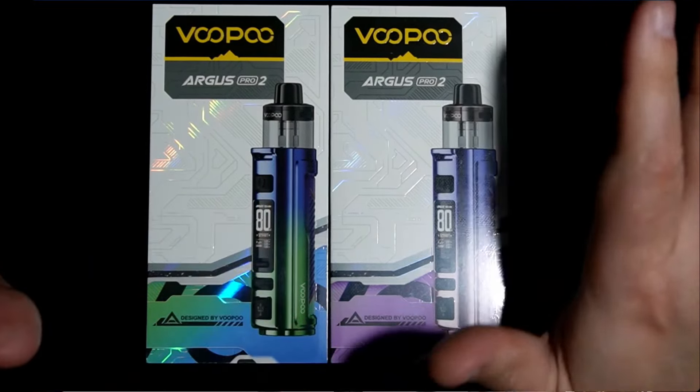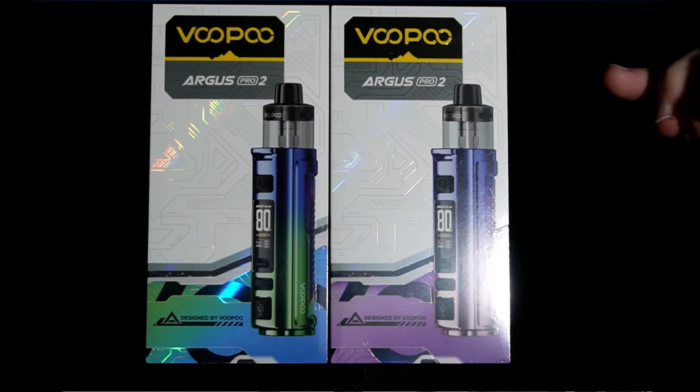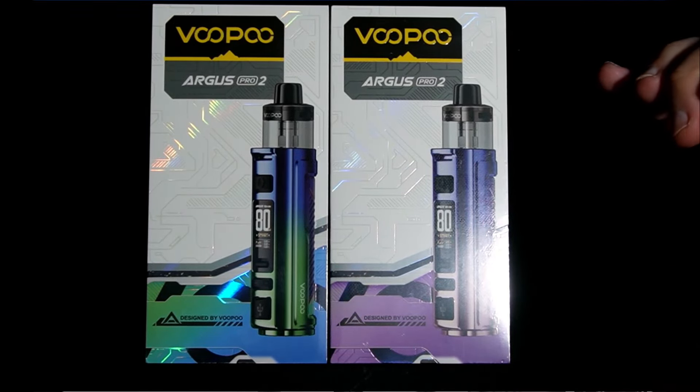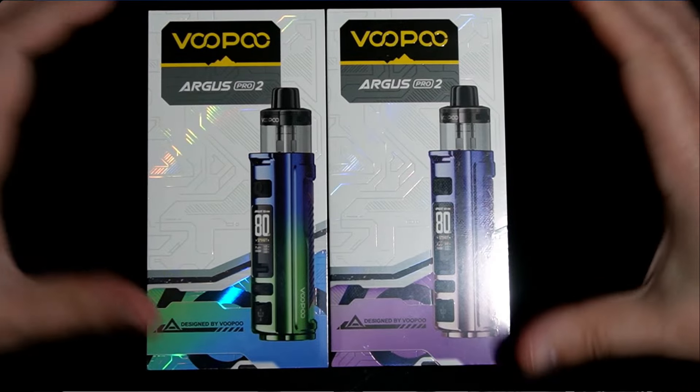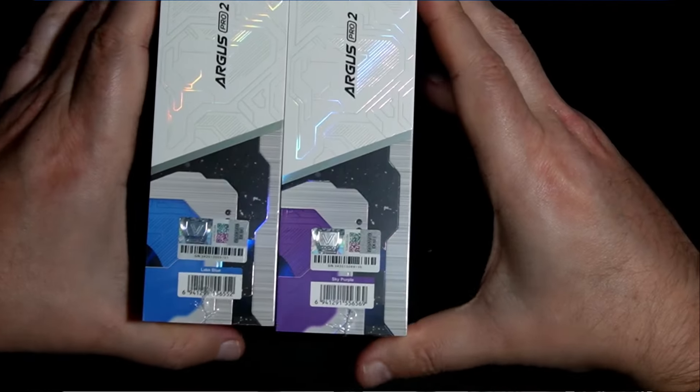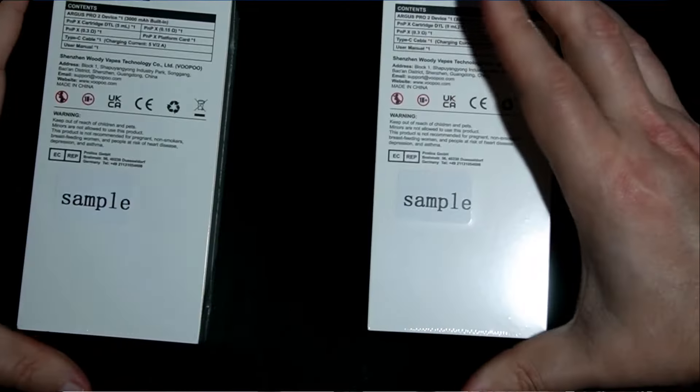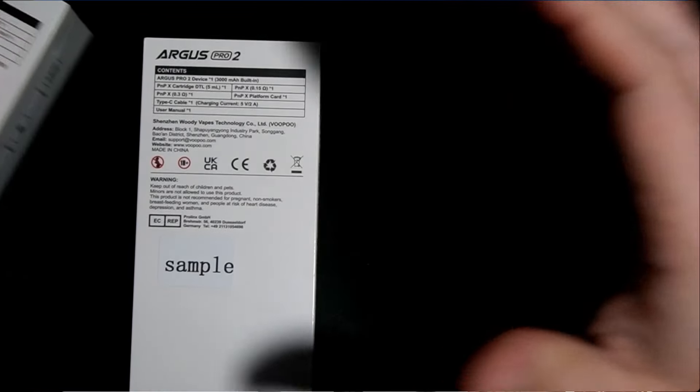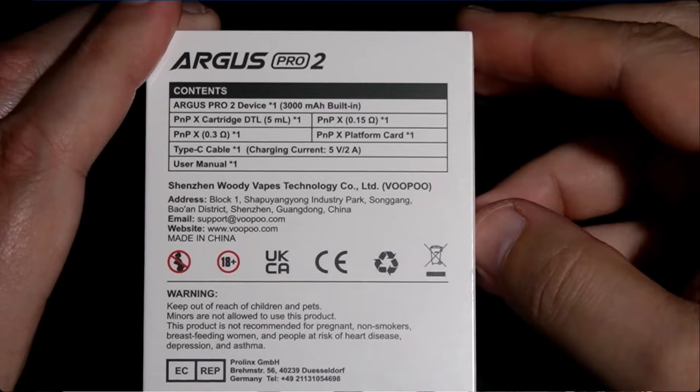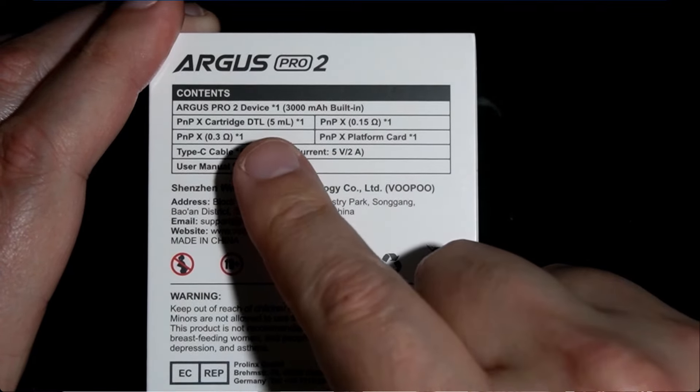Best coils in the game, period. Voopoo Argus Pro 2. It's been a while since I've done a vape review. Designed by Voopoo on the side of the box. On the back side, let me just pull one out so you can see the back of it. Everything that's included: you get your Argus Pro 2 device, the direct-to-lung 5ml capacity.